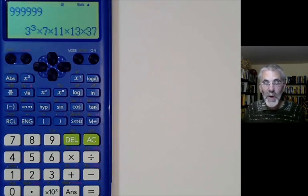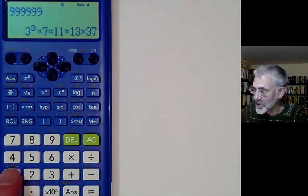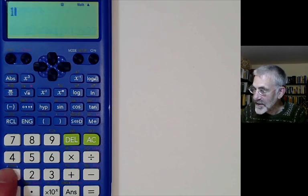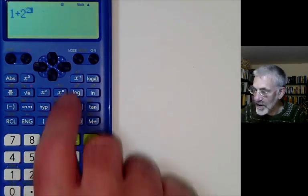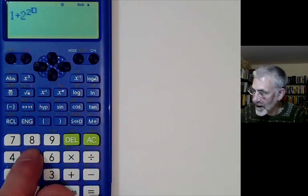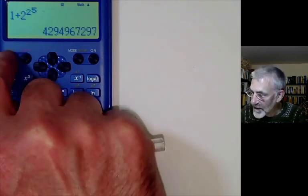In lectures earlier we mentioned Fermat's conjecture about whether Fermat numbers were all primes. So these were numbers of the form 1 plus 2 to the 2 to the n. The one Fermat got stuck on was 1 plus 2 to the power of 2 to the power of 5.